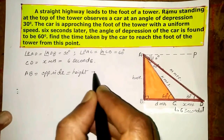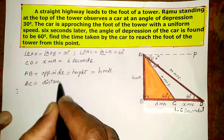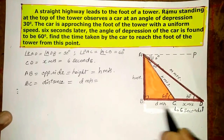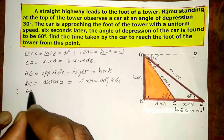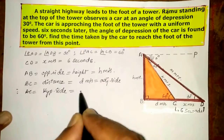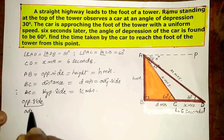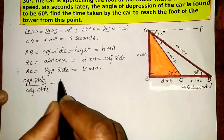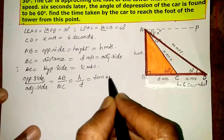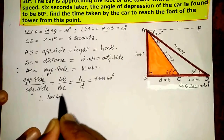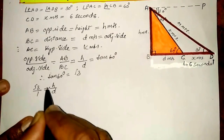Height of the tower AB equals H meters. BC, the adjacent side, equals D meters. AC, the hypotenuse, equals K meters. Opposite side divided by adjacent side equals AB divided by BC, which is H divided by D, equal to tan 60 degrees. Therefore tan 60 equals root 3, so root 3 by 1 equals H by D.